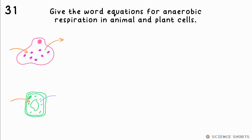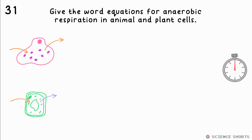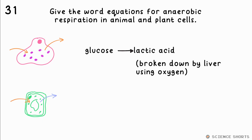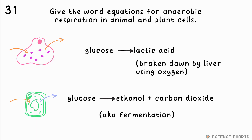Question 31. What are the word equations for anaerobic respiration in animal and plant cells? Anaerobic means without air or oxygen. In animals, including humans, this is glucose being converted into lactic acid, which then has to be broken back down into glucose by the liver using oxygen afterwards. In plants, anaerobic respiration is glucose being turned into ethanol and carbon dioxide. This is also called fermentation.